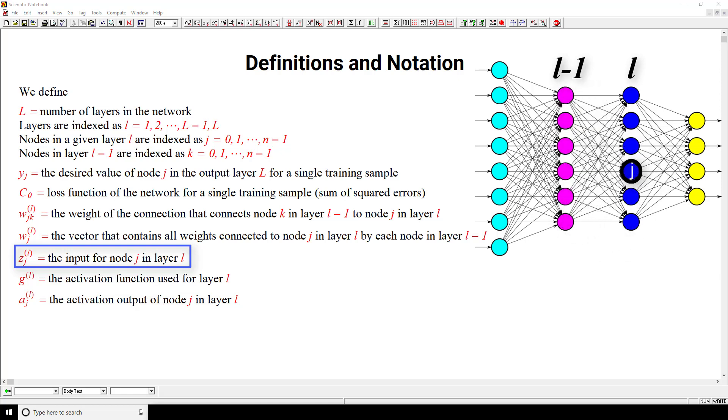Next we define G superscript l as the activation function that's used for layer l. So, after a node receives input like that that we just defined in the previous definition, it's then going to pass this input to an activation function, and we're using this G superscript l here to represent that activation function for a given layer l.